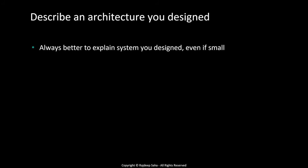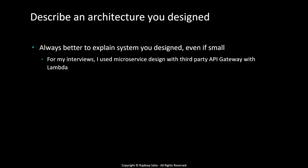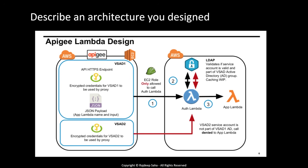Next question: describe an architecture you designed. I'll give a couple of general tips because this is a very open-ended question. It's always better to explain a system you actually designed, even if it's small. Sometimes I see candidates give an elaborate, fancy example using a lot of things, but it's clear they haven't designed this or worked deeply on it. For my own AWS interview — a pretty big interview for my career — I used a microservice design with a third-party API Gateway with Lambda. Back then we were using Apigee and had to integrate it with Lambda.